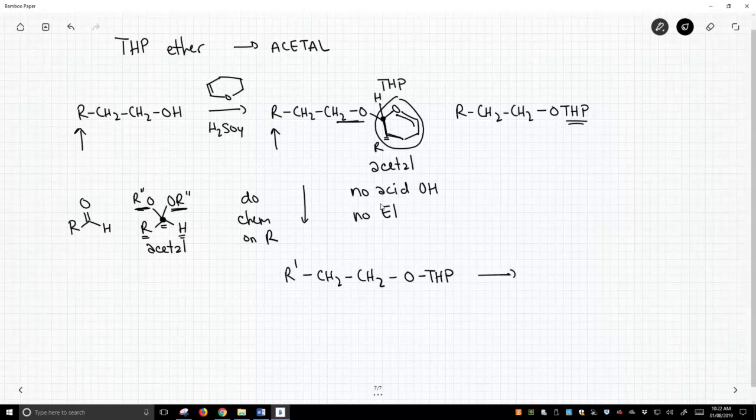It's a protecting group. It's going to be temporary. And to do that, because it's an acetal, all we have to do is treat this with a little bit of acid and water, and our THP group is gone, and we get our alcohol back. So this is a protecting group sequence.